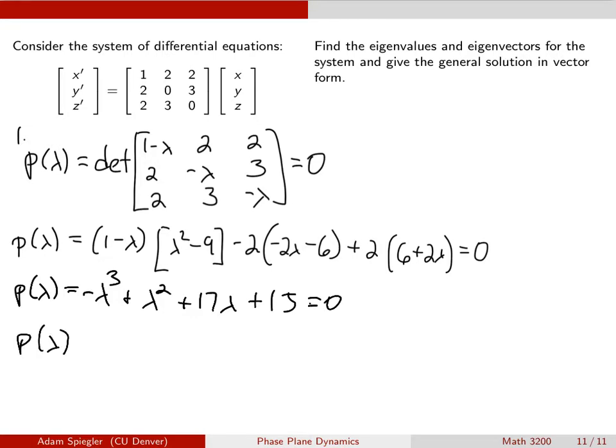Now we factor this, which is harder when you've got cubic polynomials, but here this can factor into lambda plus 3, lambda plus 1, and 5 minus lambda. From this we can see we've got three distinct real eigenvalues of minus 3, minus 1, and 5.